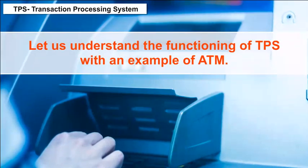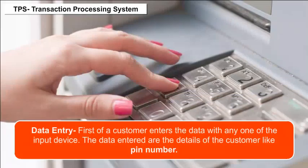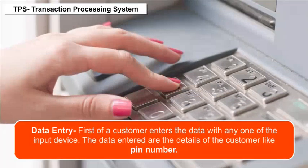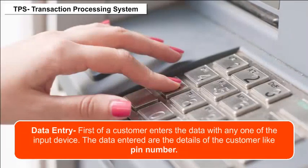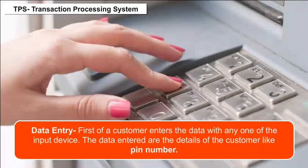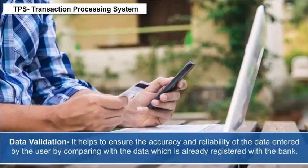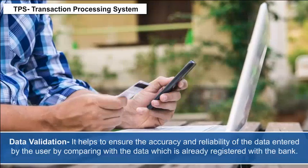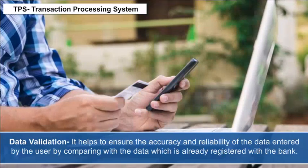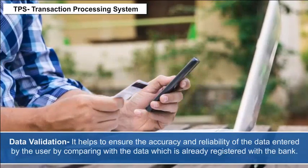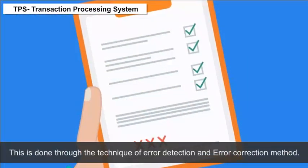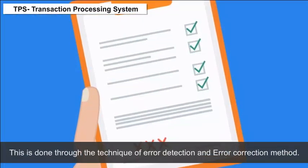Let us understand the functioning of TPS with an example of an ATM. Data Entry: a customer enters data using an input device — details like the PIN number. Data Validation: this ensures the accuracy and reliability of data entered by the user by comparing it with the data already registered with the bank, through error detection and error correction methods.